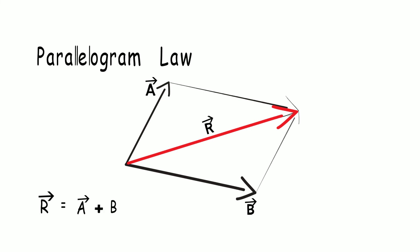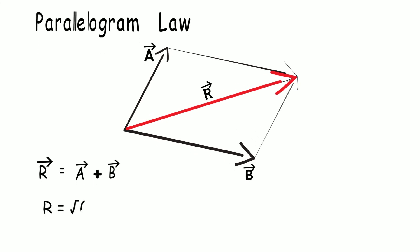The magnitude of the resultant will be given as square root of vector 1 squared plus vector 2 squared plus twice of vector 1 and vector 2 times cosine of angle between the vectors. This is a modified cosine law, where the negative sign is replaced by a positive sign.